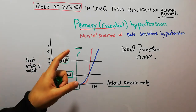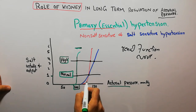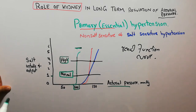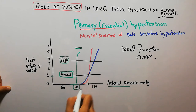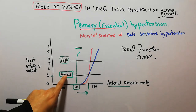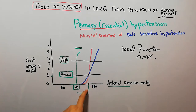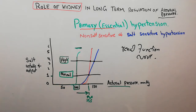In essential hypertension we have two types. In both types there is an increase in arterial pressure, and the curves have moved towards the right side. Even with normal intake of salt, the curves have shifted and the arterial pressure is high — it may be around 130 or 135 mmHg — at a normal salt intake level.